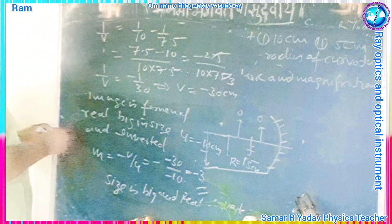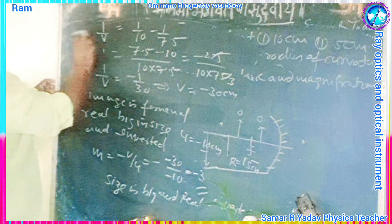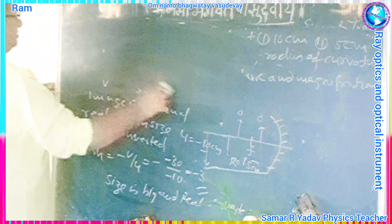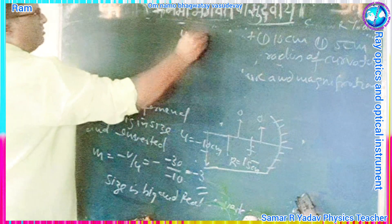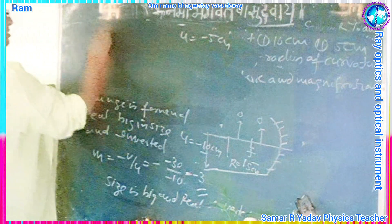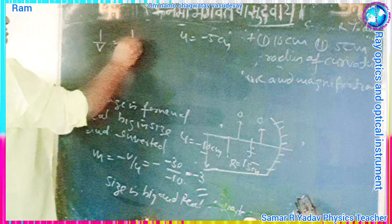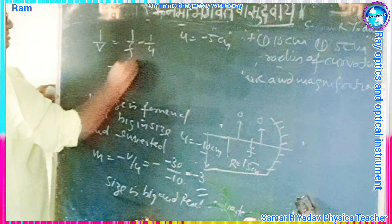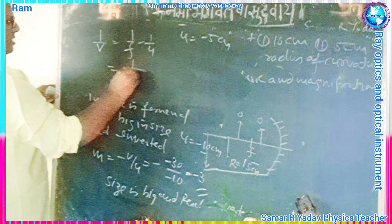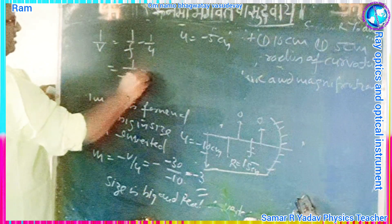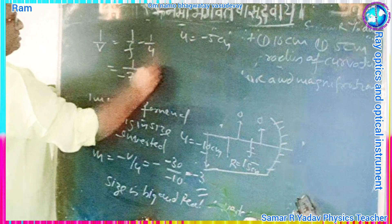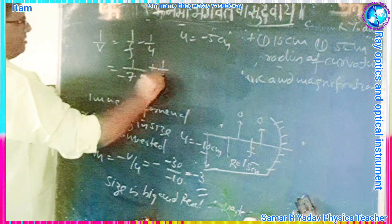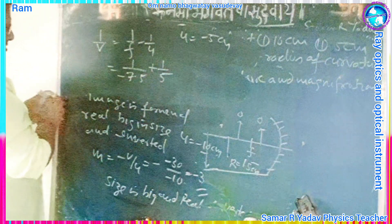Now we will consider the second case, when U is equal to minus 5 cm. So 1 upon V is equal to 1 upon F minus 1 upon U, equal to 1 upon minus 7.5 minus and minus, that is plus 1 upon 5. Now taking the LCM.